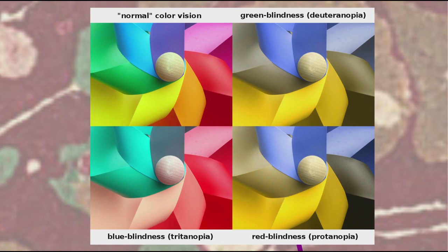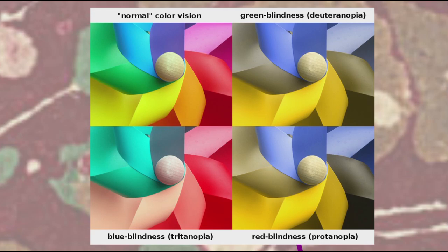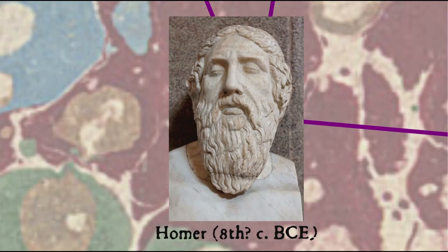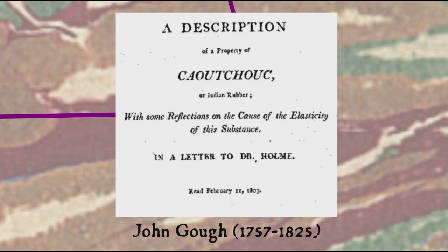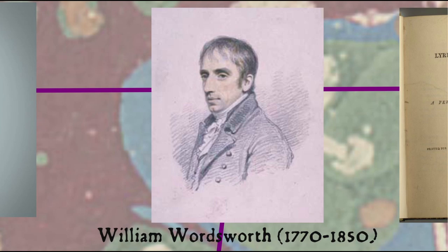Dalton himself was colourblind, as was his brother, thus suggesting the condition was hereditary. And so this makes three of the people involved in our story with some form of visual impairment: the blind bard Homer, John Gough, and Dalton — not to mention Wordsworth and his impaired sense of smell.